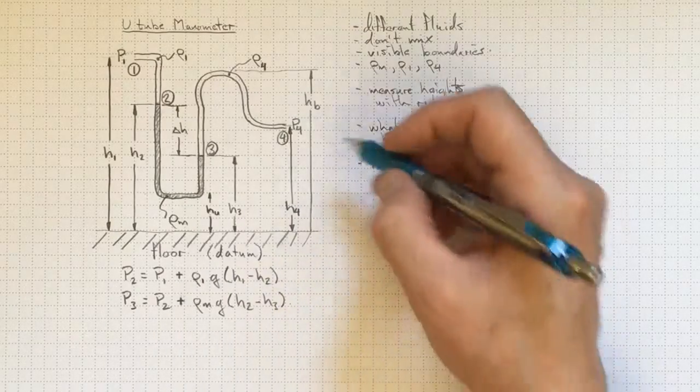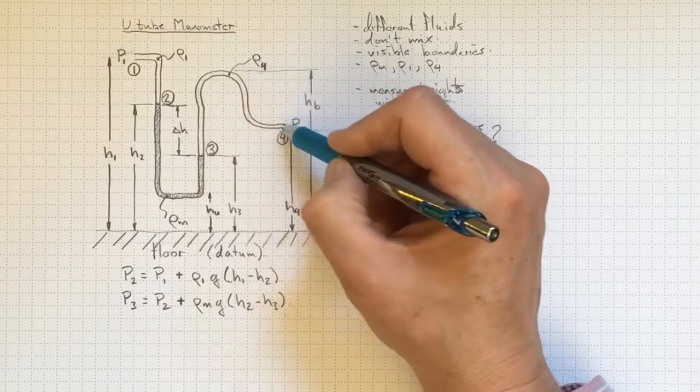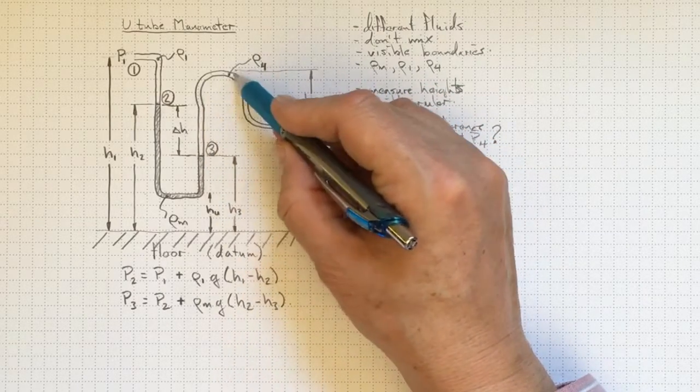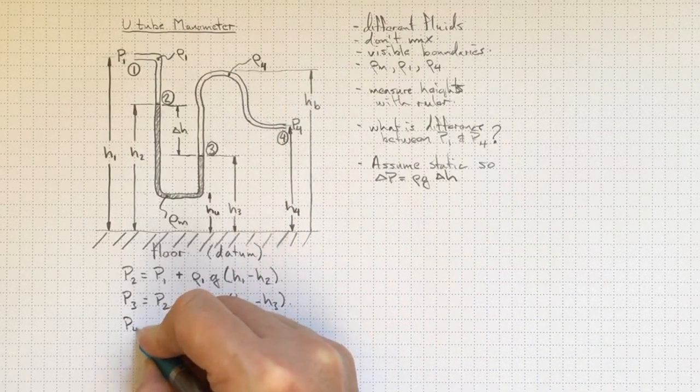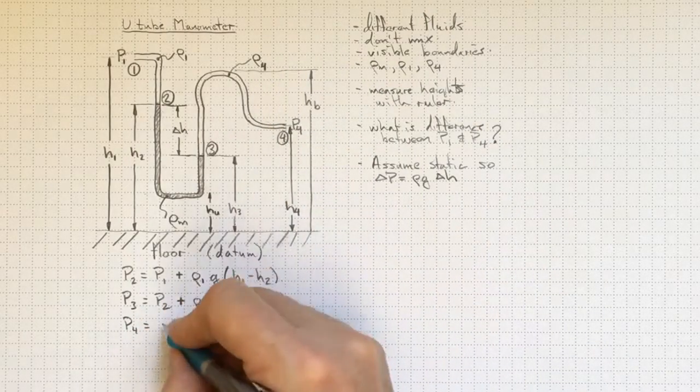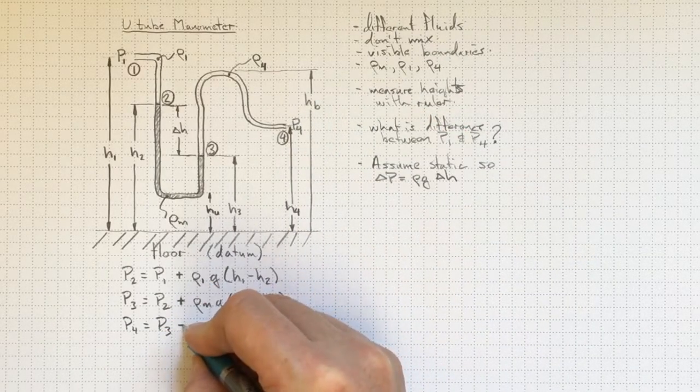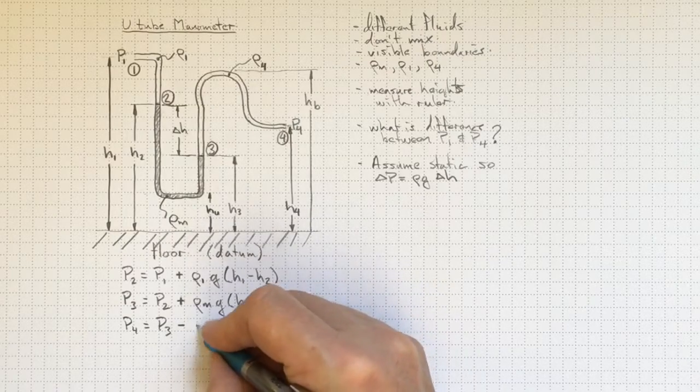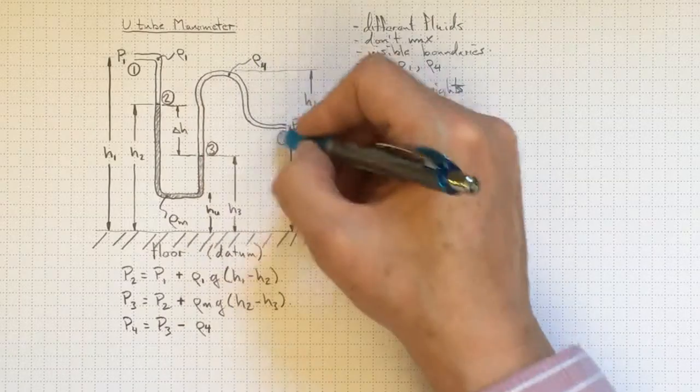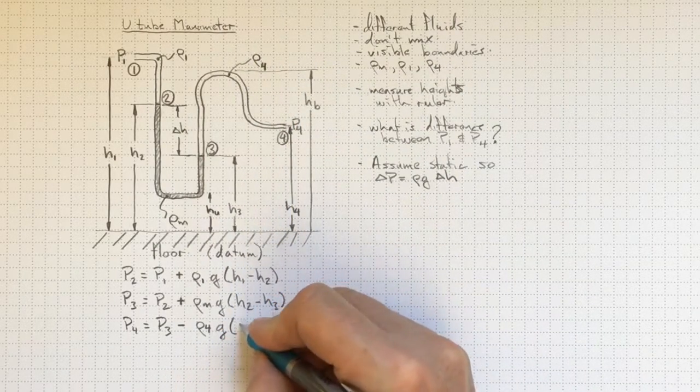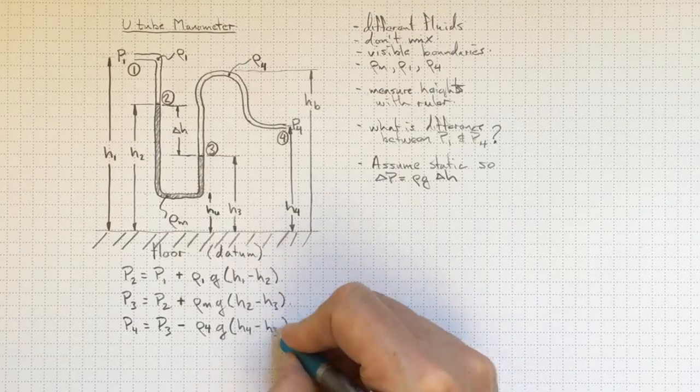And finally, we can get from location three to location four through the rest of the tube, and knowing that the fluid in this part of the tube is a density rho four. We'll get that the pressure at four is equal to the pressure at three. Location four is higher, so we're going to have a lower pressure, so a negative sign times the density of the fluid at four in this section of tube here, times G times H4 minus H3. So keeping all of these positive, making sure we get the sign right.